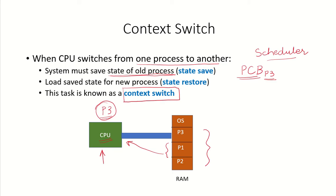Once the state of P3 has been saved, for the new process coming in — say P1 — the state will be loaded. This is called state restore. Whatever information was in the process control block of P1 will now be loaded into the system. The register contents that P1 was using earlier and their values will be loaded, the program counter value will be loaded, and the information about the open files that the process is using will be loaded. If it is a new process, then the value of the program counter would be initialized in the system.